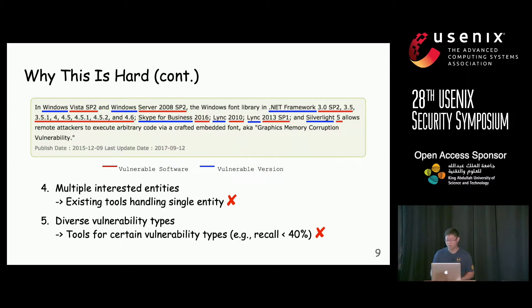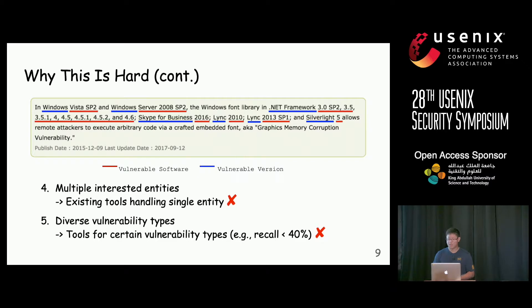Here is another report sample: 'In Windows Vista SP2 and Windows Server 2008 SP2, the Windows file library in .NET framework' — so many entities — we cannot use techniques that handle only a single entity. Another problem is that vulnerability types are diverse. One sample has memory corruption, another has SQL injection. Therefore, we can't use tools designed for one type to solve all different types. We tried one such tool and found that its recall is smaller than 40%.